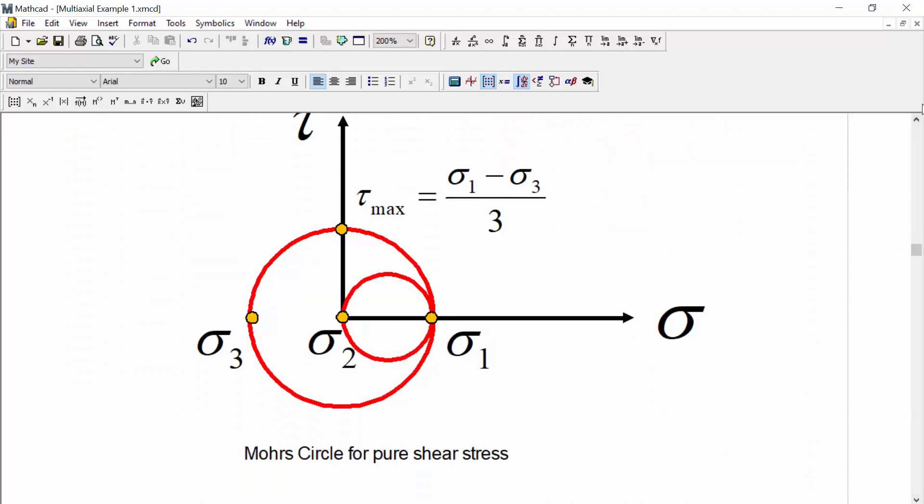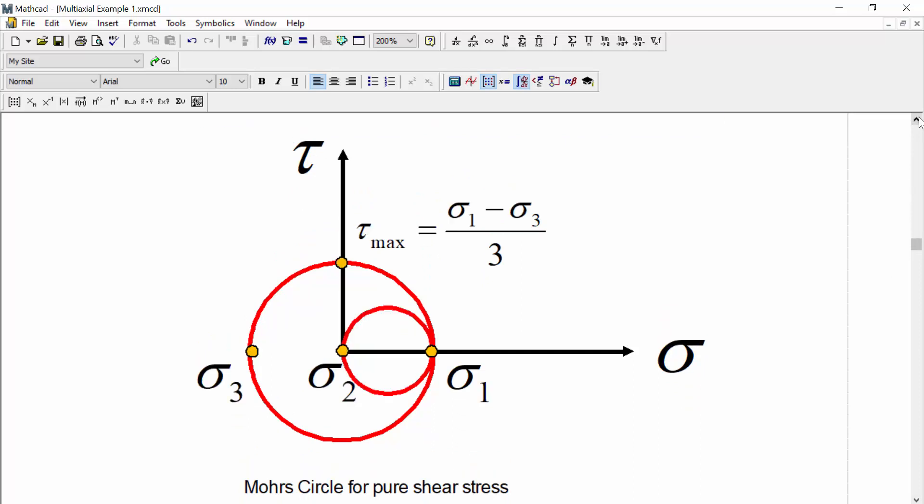We're also given a Mohr's circle for the pure shear stress case. And this is the case we want to find. We want to find what would be an equivalent pure shear stress amplitude. And in this case, we can see that our tau max is in alignment with 0 normal stress. So that is our pure shear stress case. And sigma 1 and sigma 3 can be calculated or back calculated from our tau max equation.